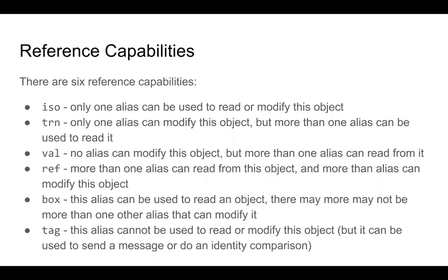Box means that this alias can be used to read an object, and there may not be more than one alias that can modify it — box is a little weird. Tag means that this alias cannot be used to read or modify the object, but it can be used to send a message to the actor or to do an identity comparison. Those are the six reference capabilities.